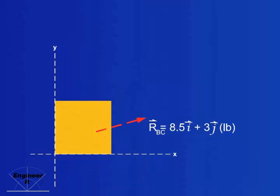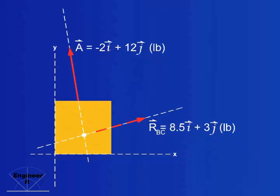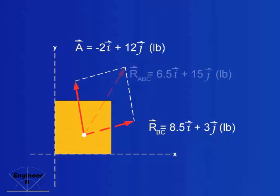Given that vector A equals negative 2i plus 12j in pounds, use the same process to find their resultant ABC is equal to 6.5i plus 15j in pounds.